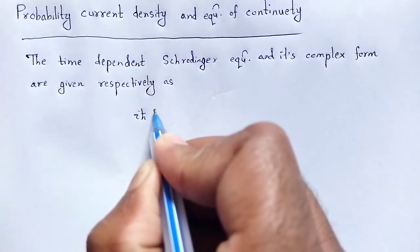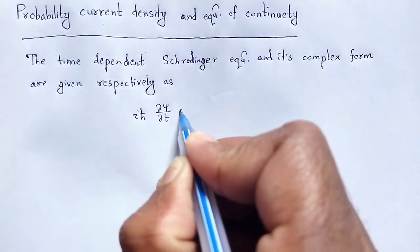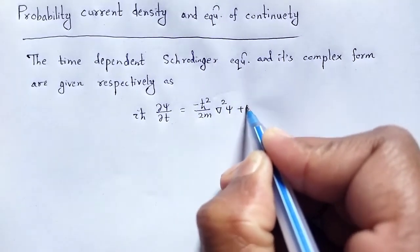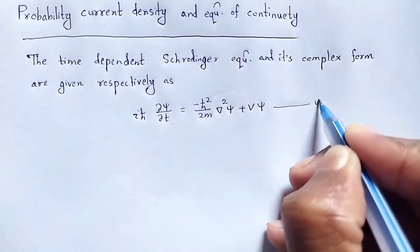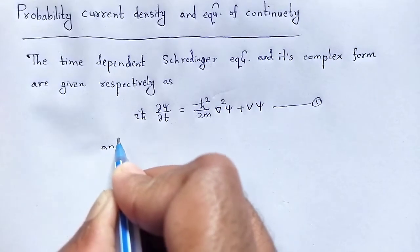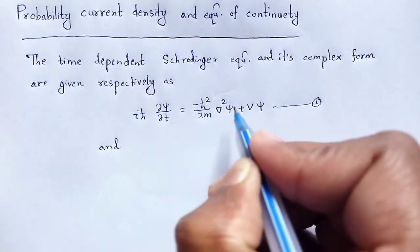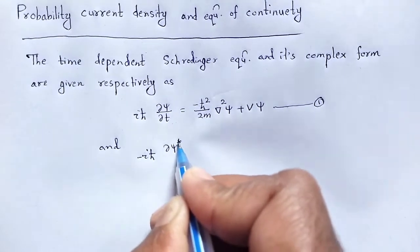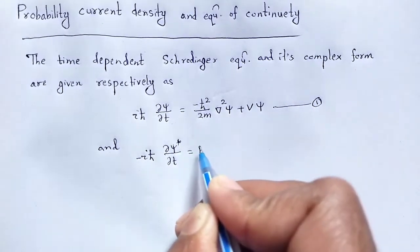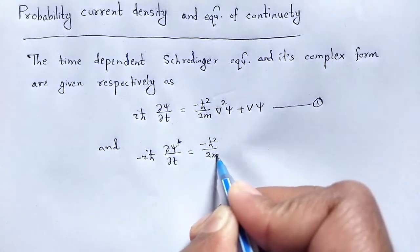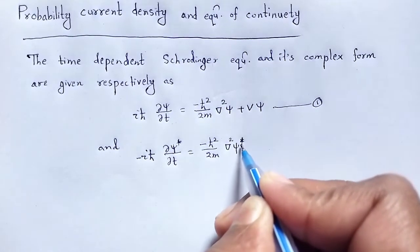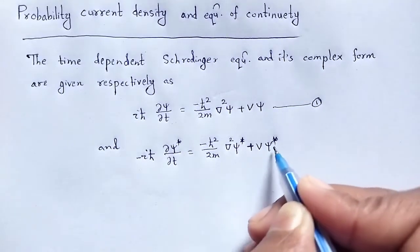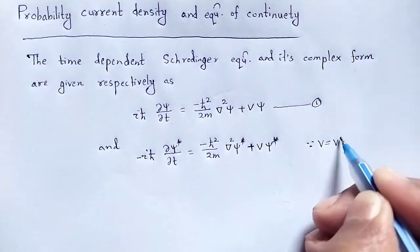iℏ del ψ/del t equals minus ℏ² divided by 2m grad² ψ plus V·ψ — this is equation 1. Its complex conjugate is: minus iℏ del ψ*/del t equals minus ℏ² by 2m grad² ψ* plus V·ψ*. Here V* equals V, since V is a real quantity.